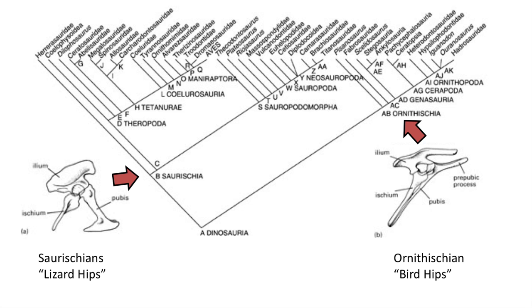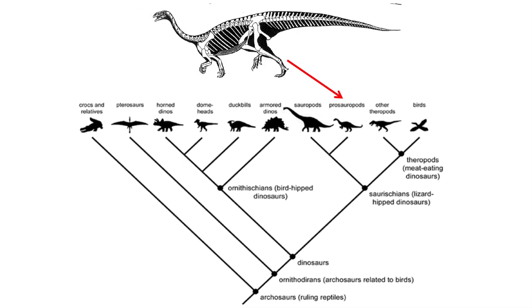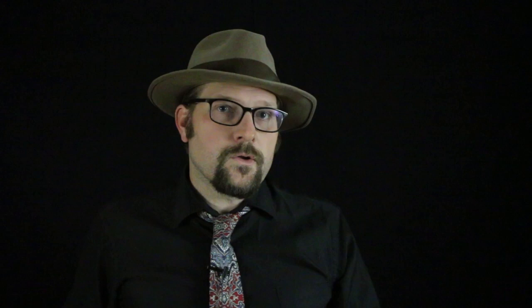Let's place each of the major groups of dinosaurs on the cladogram and distinguish them as either members of the Ornithischia or Saurischia clades. The Saurischia contain the mostly carnivorous theropods, like Allosaurus, as well as the long-necked dinosaurs such as the prosauropods and the sauropod dinosaurs — the giant Apatosaurus and Diplodocus dinosaurs of the late Jurassic of North America.